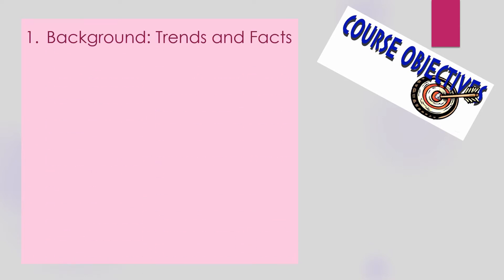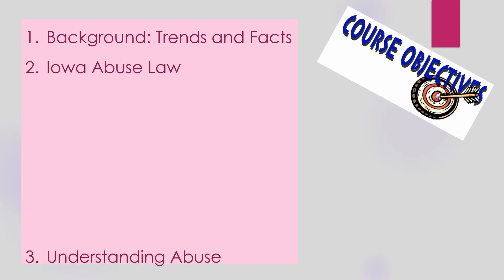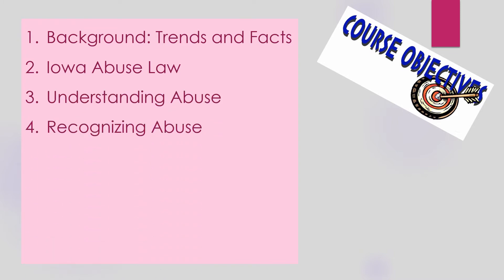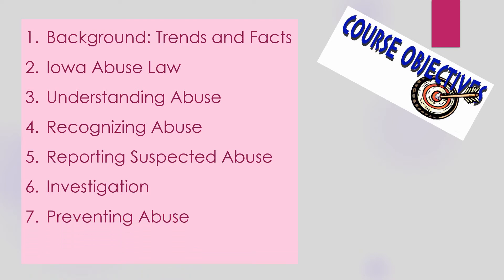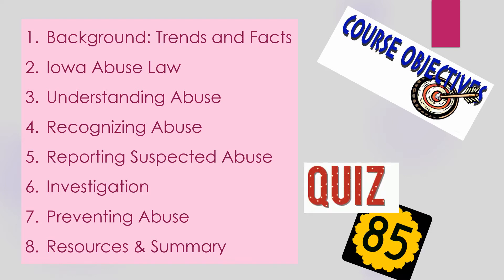In this course, we will cover the following topics: Trends and Facts Relating to Elder and Dependent Adult Abuse; The Iowa Law with Respect to Elder and Dependent Adult Abuse; Understanding Abuse; Recognizing Different Types of Abuse; Reporting Suspected Abuse; How Reported Abuse is Investigated; Ways to Prevent Abuse; and Final Notes about Elder and Dependent Adult Abuse. A short quiz to test your knowledge of Dependent Adult Abuse for Mandatory Reporters will follow this information.